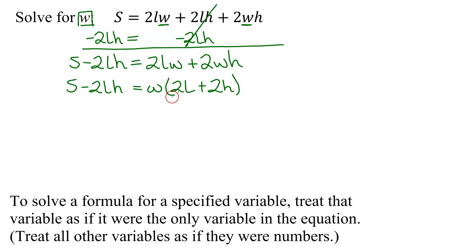So how is the quantity 2L plus 2H attached to the W? It's attached by multiplication, so to get rid of it, you're going to divide both sides by the quantity of 2L plus 2H. So now on the right-hand side, the 2L plus 2H reduces, and I just get left with W.